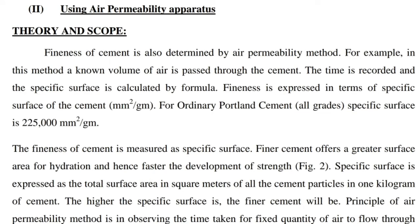Now, the second method of determining the fineness of cement using air permeability apparatus. Fineness of cement is also determined by the air permeability method. In this method, a known volume of air is passed through the cement, the time is recorded, and the specific surface is calculated by formula. Fineness is expressed in terms of specific surface of cement in mm² per gram. For ordinary Portland cement, the minimum specific surface is 22,500 mm² per gram. Fineness of cement is measured as a specific surface.